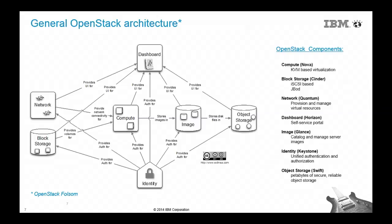OpenStack has several components that are very loosely coupled — you can pick and choose what components you really want to use within your environments. In our case, we wanted to experiment with everything. So we installed Compute, Block Storage, Neutron, the dashboard Horizon, image management via Glance, Keystone, and also Swift.